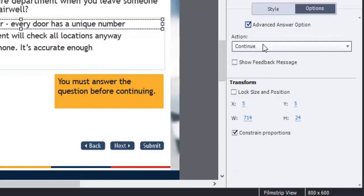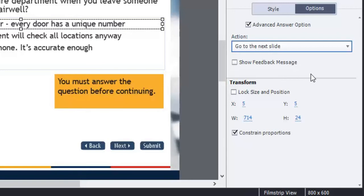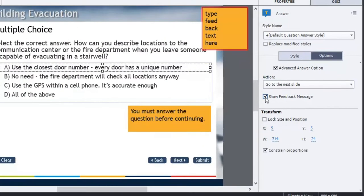Now we need to choose an action. Start thinking about the opportunity here: you can have this quiz question direct the learner to any place in your course depending on how they answer the question. So think scenario and branching learning. You've got some real neat opportunities here. In this case, I'm just going linear, so we'll just go to next slide.